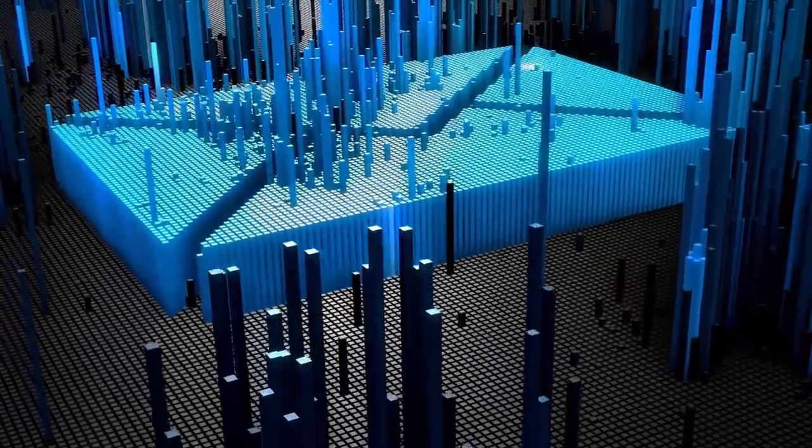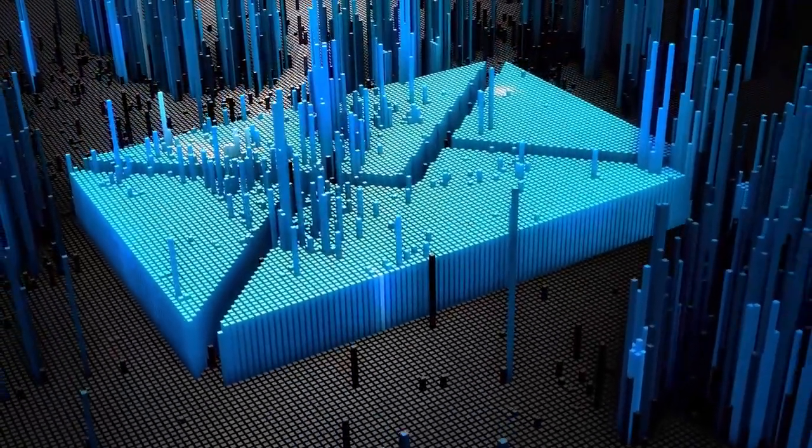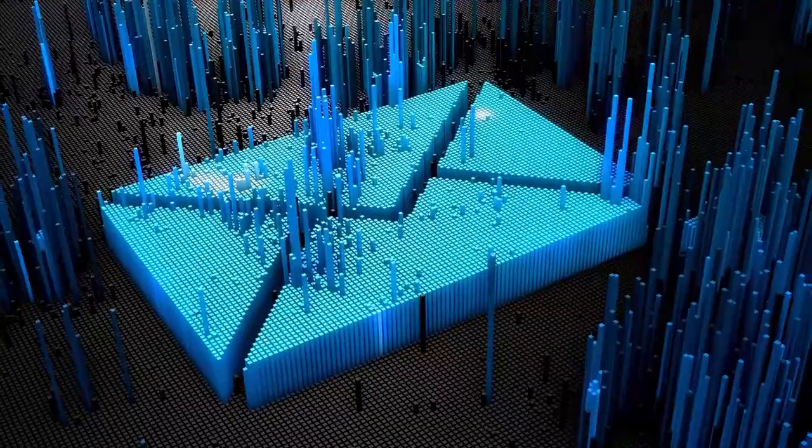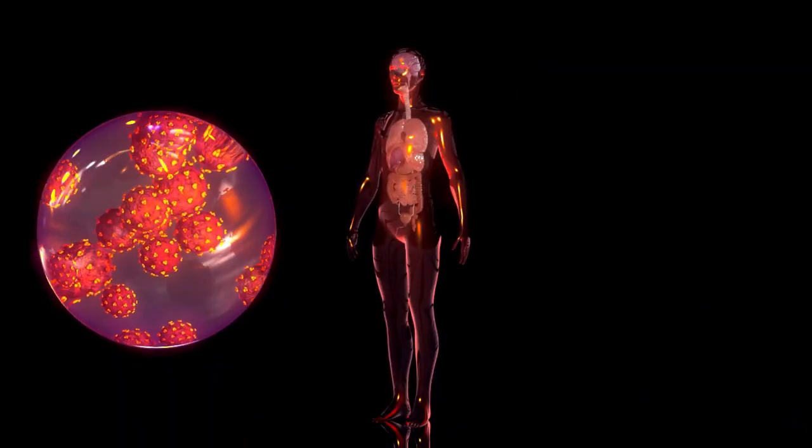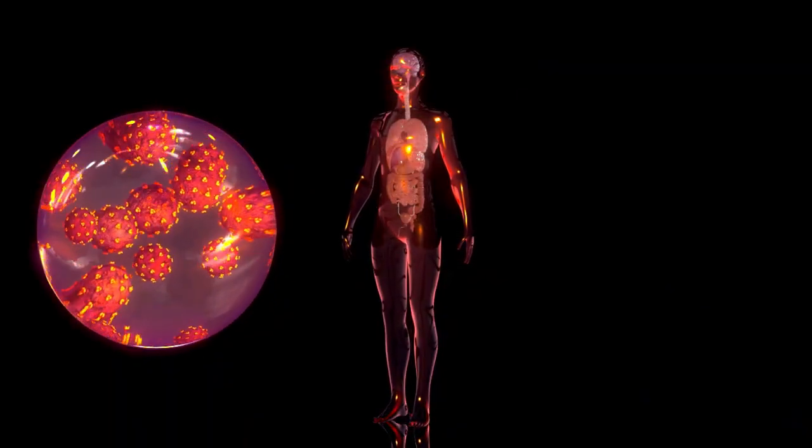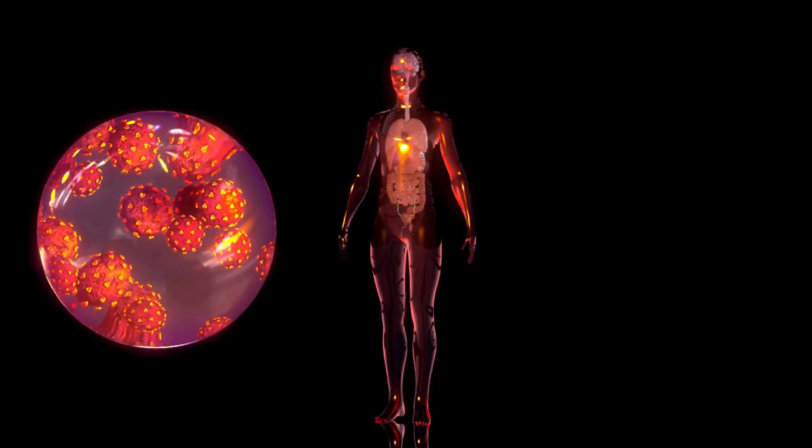The observable universe is the part of the universe that we can actually see and study using telescopes and other scientific tools. This part includes everything from nearby stars and planets to the farthest galaxies we can detect.